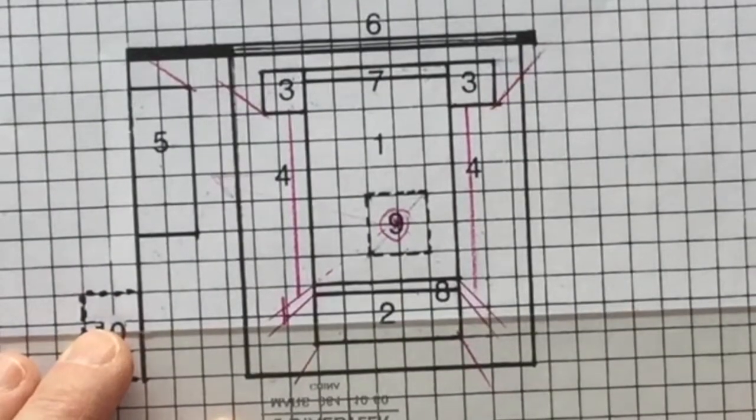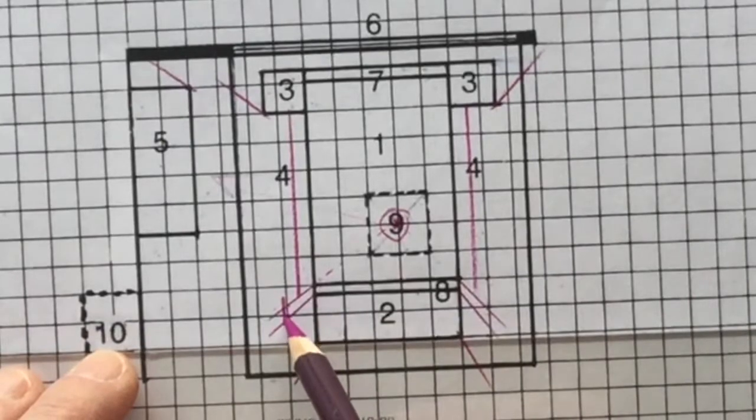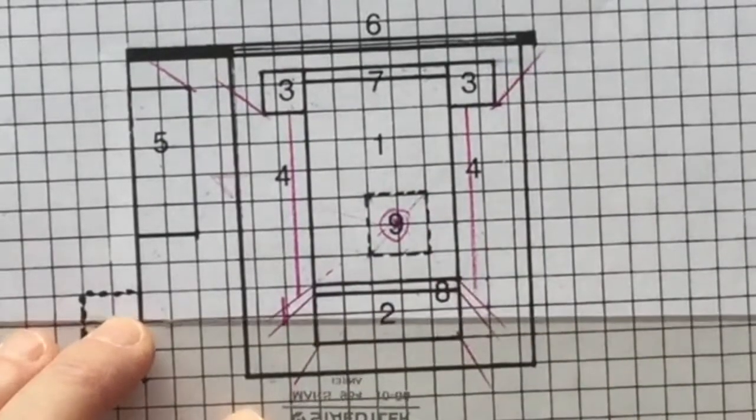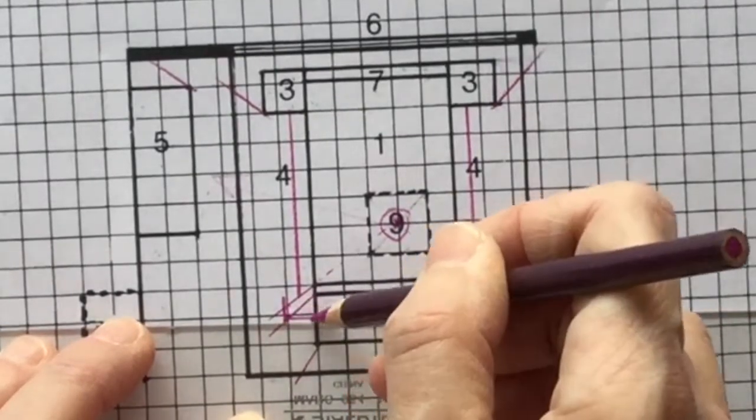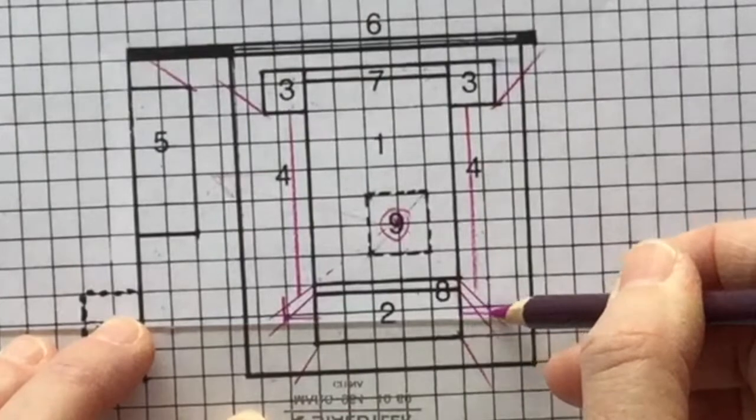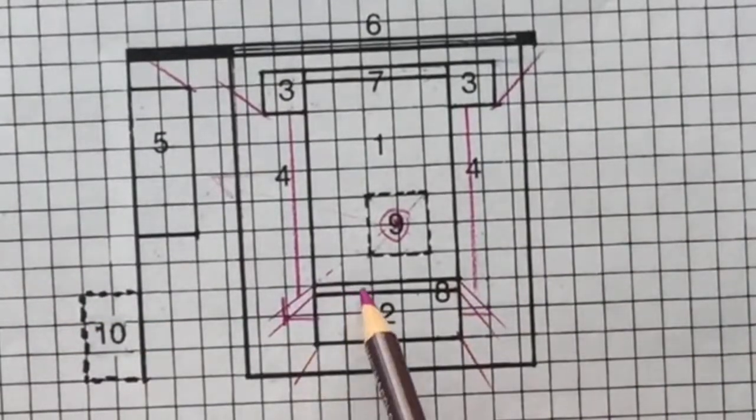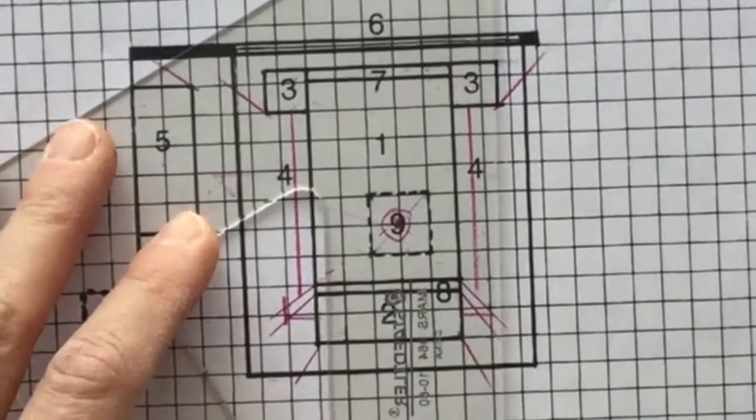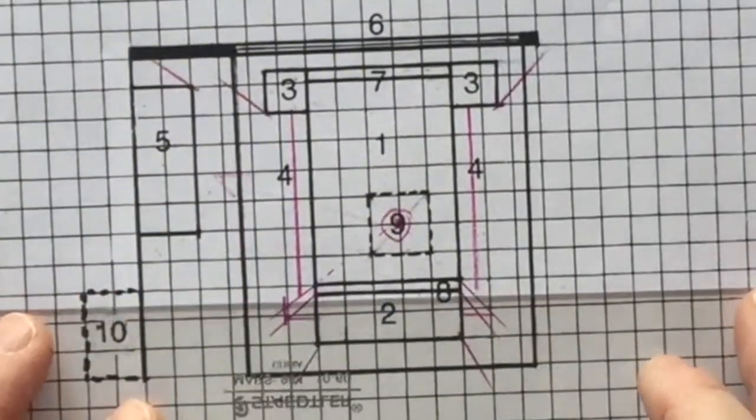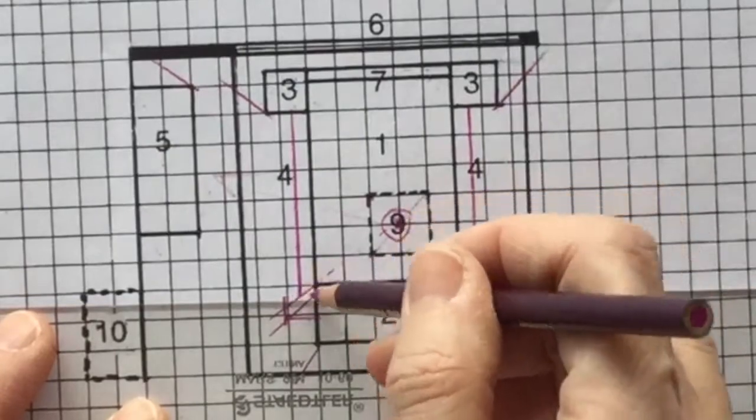And once I decide that, where that crosses this projection line from the light, I just go across. And the reason I know to go straight across again is because this is a shadow for the top of the footboard. So that's the shape of my shadow so far, and these will come across and meet.